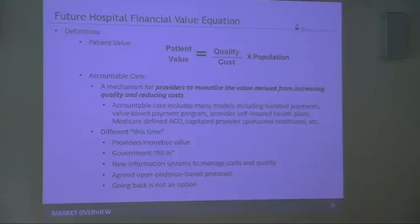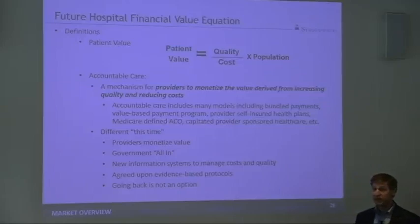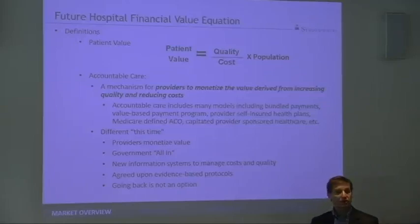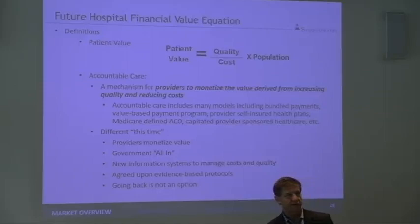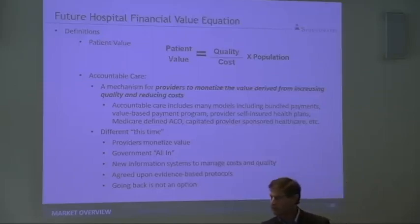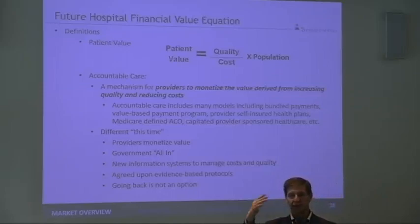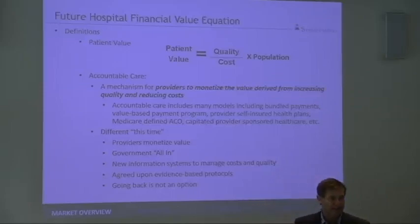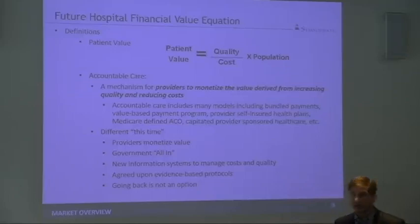It takes the form of a lot of different things: bundled payments, value-based payment programs, your own provider self-insured health plan. If you think about your own self-insured health plan — you insure all your 5,000 employees at Altoona — if I do anything to improve their quality, reduce the cost, I monetize that. I put that benefit in my back pocket. Medicare ACOs, provider-sponsored health plans.